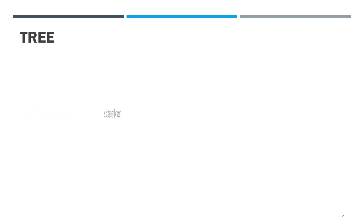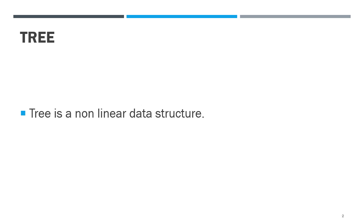Tree is a non-linear data structure. In a linear data structure, elements form a sequence and are stored in consecutive memory locations, such as arrays and linked lists. But in the case of a non-linear data structure, all elements are not stored in a sequence.